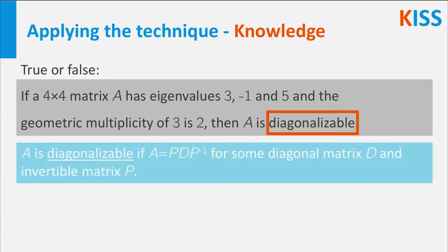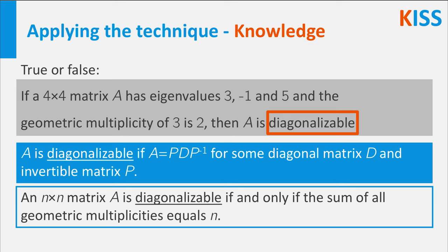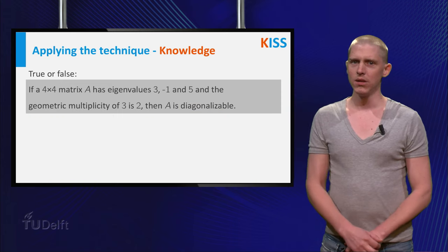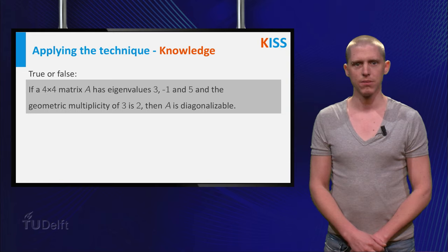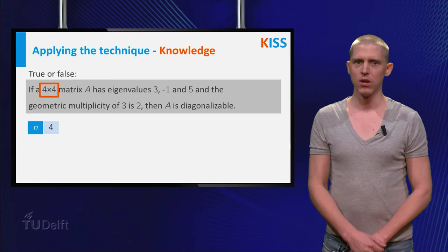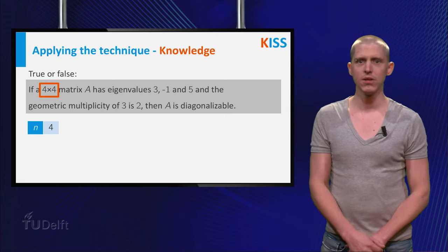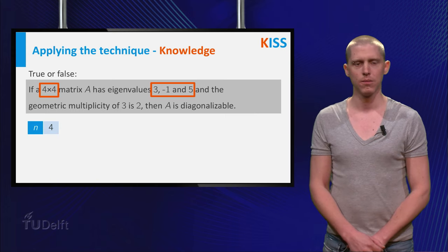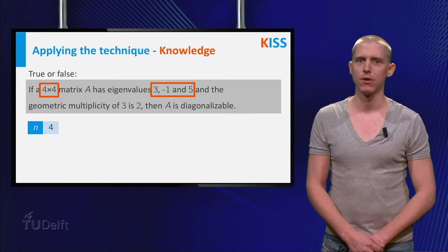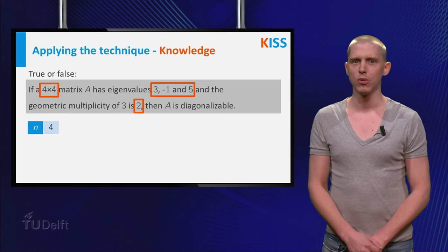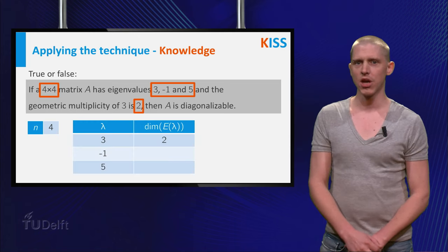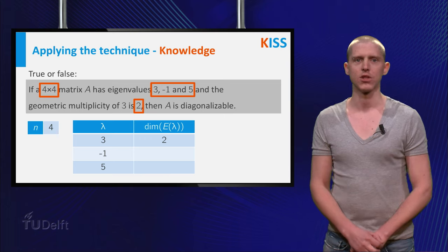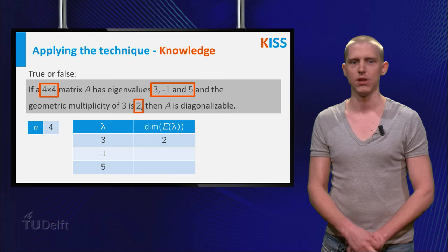The final term is diagonalizable, for which you have seen the shown definition and theorem during the linear algebra course. Now take a look at the information given in the statement. You are given that A is 4 by 4, so n equals 4 in this question, and A has 3 eigenvalues, which are 3, minus 1 and 5. You even have a little more information on eigenvalue 3, namely that its geometric multiplicity is 2. You can use a table to record this information in a compact manner. You have now completed the first step, collecting all the knowledge given in the question.